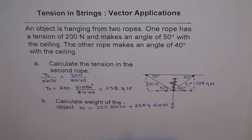We have 200 sine of 50 plus 238.4 sine of 40 and that gives us 306.44. That becomes our answer for this question.